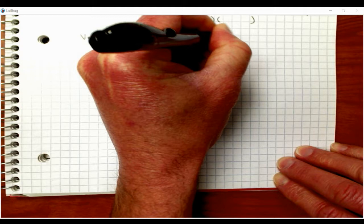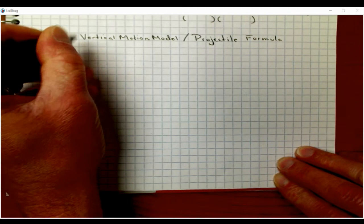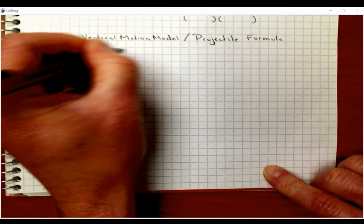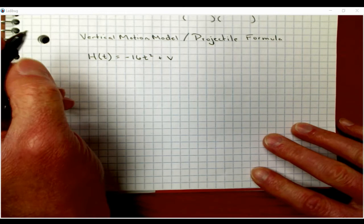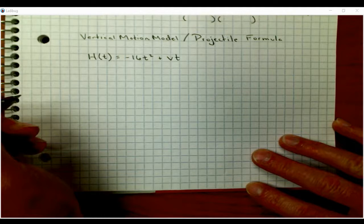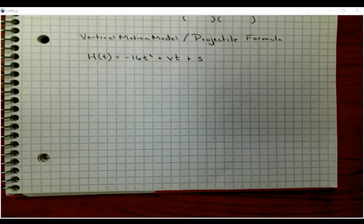The height of any object at any given time t is equal to negative 16t squared plus v, which is the original or initial velocity, how fast it's leaving the cannon, the arm, the kick, multiplied by t, and then plus s, which is the starting height. So if I'm throwing a ball, it would be four or five feet off the ground where my arm is located. This is the generic projectile formula.